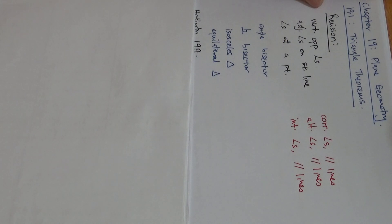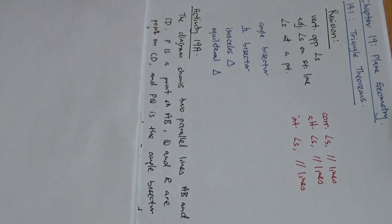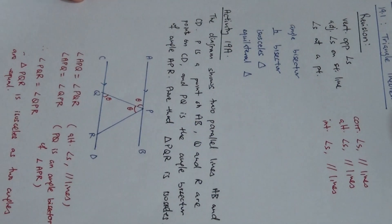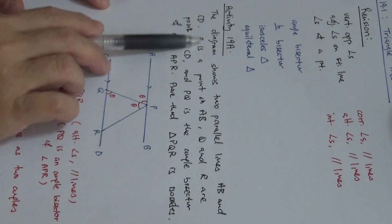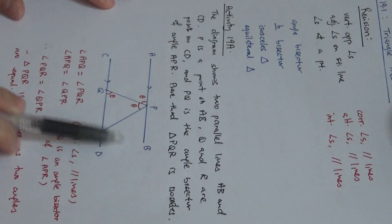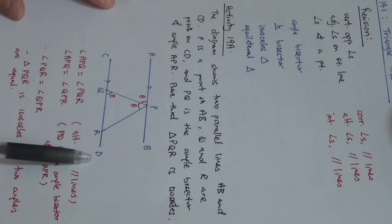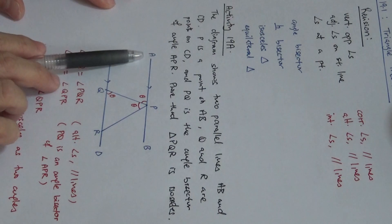So all these are the things that we have to know from our Maths. Now let's look at Activity 19A found on page 163. I'm going to teach you how to write a mathematical proof or mathematical theorem. The question says the diagram shows two parallel lines AB and CD. P is a point on AB, and Q and R are points on CD, and PQ is an Angle Bisector of the Angle APR.